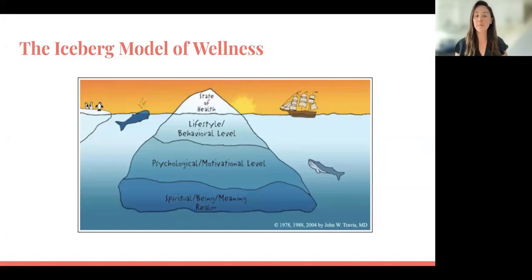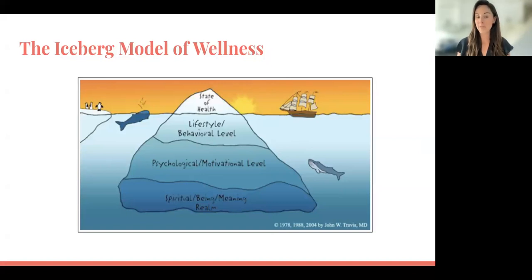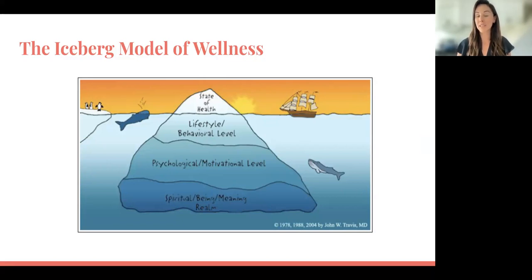These would include lifestyle and behavioral factors — things like sufficient physical activity, sufficient sleep, a nutritious eating plan, social connection, and substance use habits. All of these lifestyle and behavioral factors contribute to one's overall state of health. We also see the psychological motivational level, which includes what's driving health behaviors or deterring one from completing them.